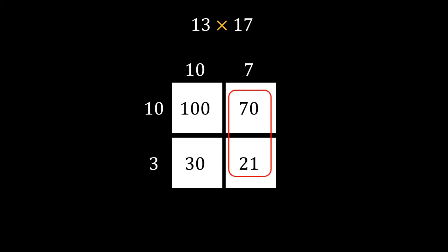First, we are finding the sum of 70 and 21 which is 91, and then 30 and 100 which is 130. Finally, we can add both the sums. 130 plus 91 finally equals 221. So that means 13 times 17 equals 221.